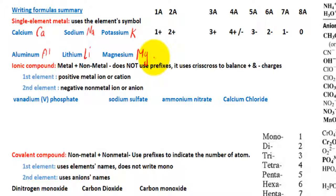So again, when you see a single element metal, use the element symbols on the periodic table. Another common type of substance that you are going to see is ionic compound, which consists of metals and non-metals.